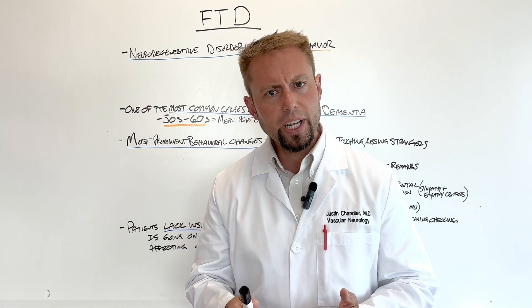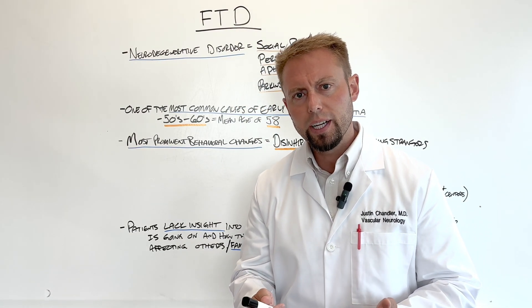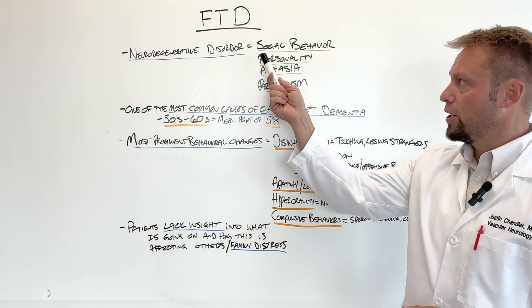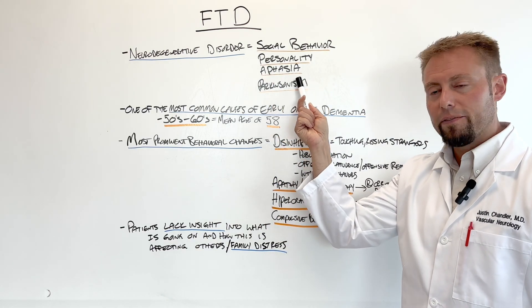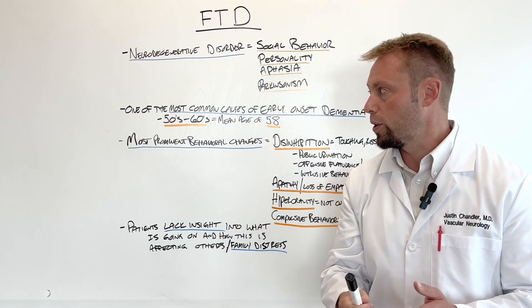Frontal Temporal Dementia is a neurodegenerative condition that primarily affects individual social behavior, their personality. It can cause aphasia and Parkinsonism. Let's talk about this more.